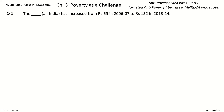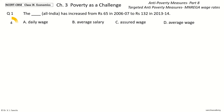Question 1: The Dash All India has increased from Rs. 65 in 2006-2007 to Rs. 132 in 2013-2014. The options are: Daily Wage, Average Salary, Assured Wage, Average Wage. The answer is Average Wage. The Average Wage All India has increased from Rs. 65 in 2006-2007 to Rs. 132 in 2013-2014.